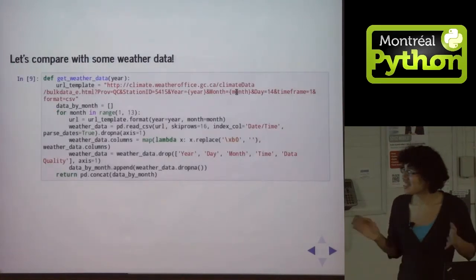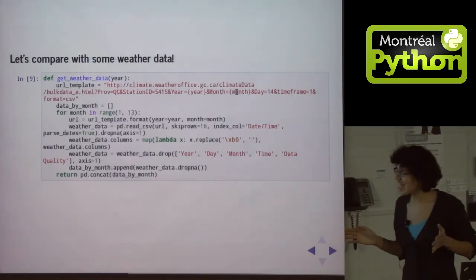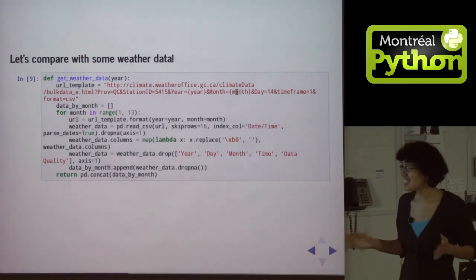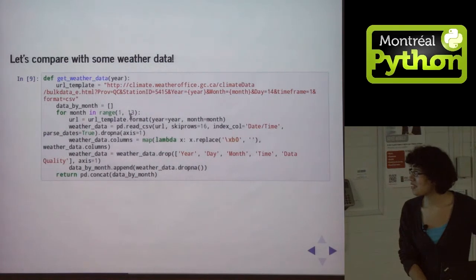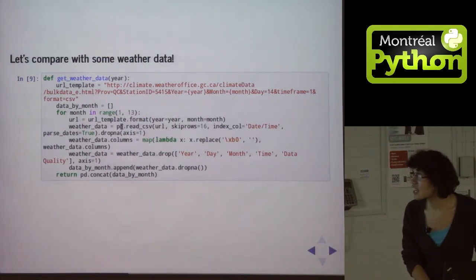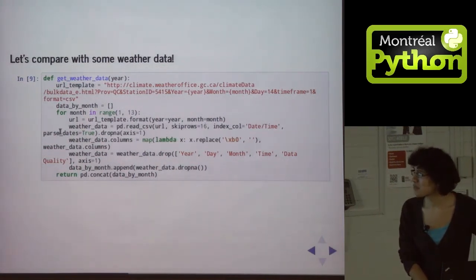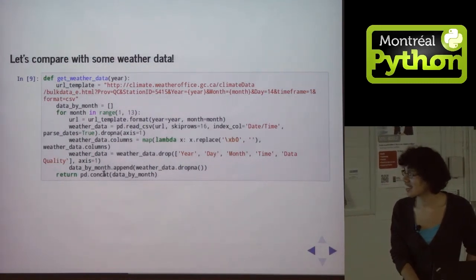So I wrote a little function called get_weather_data, which goes to weatheroffice.gc.ca, and does a bunch of stuff. So I'm not going to go into detail what this does, but it reads the CSVs, skips the first 16 rows where for some reason there's some metadata. This is the index column, parse my dates for me, drop the columns I don't need, get rid of some special characters, drop some more columns, and then concatenate them all together.